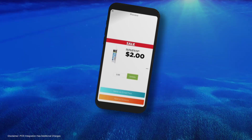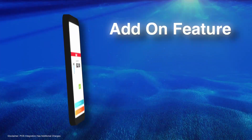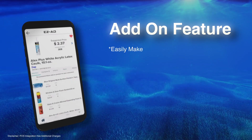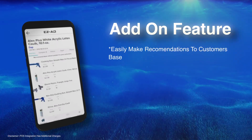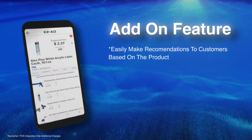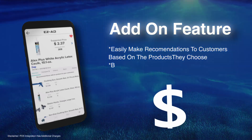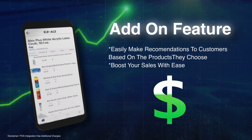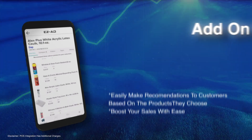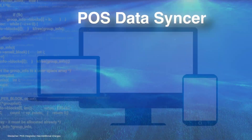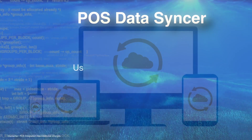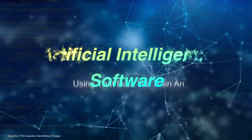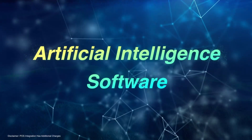It's that easy. Next is the add-on feature. These are recommendations your salespeople can make to customers, based on the product they choose to help boost your sales. This is done through the POS Data Synker. Using that data, we train an artificial intelligence software.